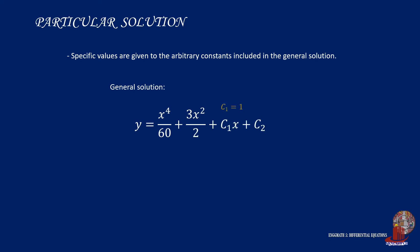From the previous general solution, if c1 is computed as 1 and c2 is taken as 2, we simply plug these values in to get the particular solution: y equals x to the fourth power over 60 plus 3x squared over 2 plus x plus 2.